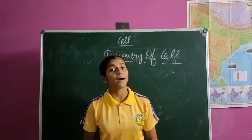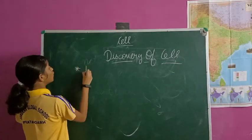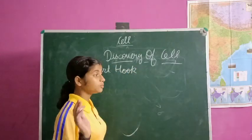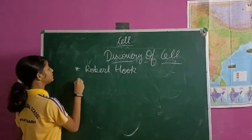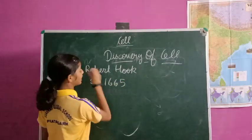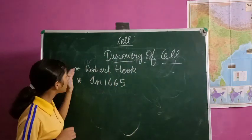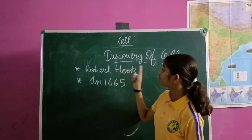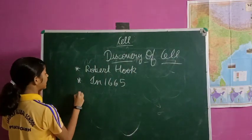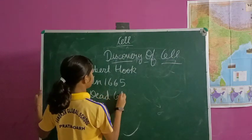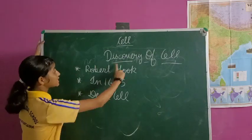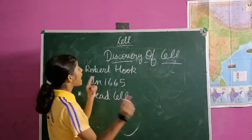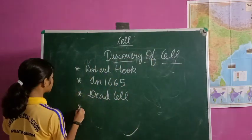Cell was discovered by a scientist named Robert Hooke in 1665. The cell that was discovered in 1665 by Robert Hooke was actually a dead cell. So the discovery of the cell was done by Robert Hooke in 1665, and that was a dead cell. This discovery was done with the help of cork slices.